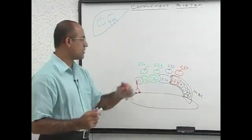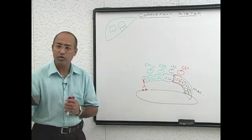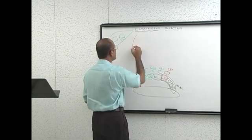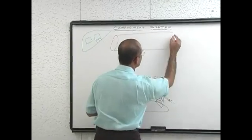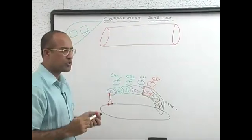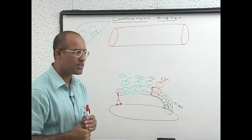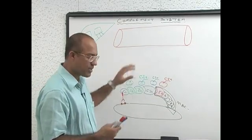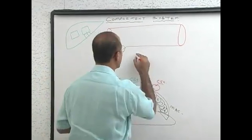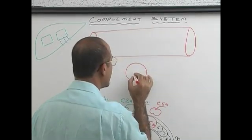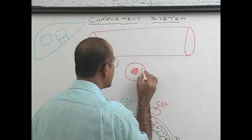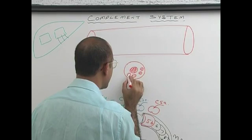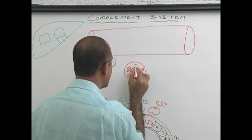Now we will see the functions of these complement fragment proteins. There is a blood vessel and vascular system here. Every connective tissue in your body has mast cells. Mast cells are connective tissue cells. They have a nucleus and many granules loaded with histamine and proteolytic enzymes — serotonin as well.